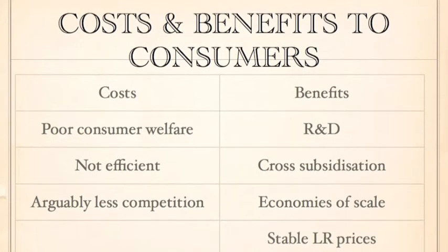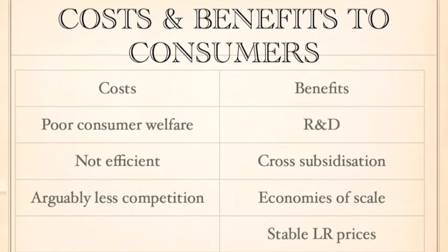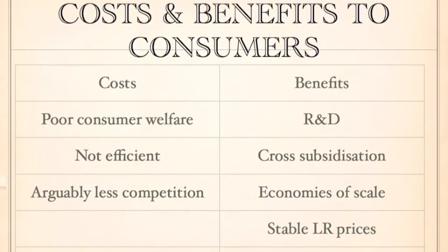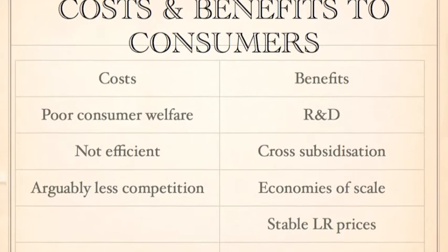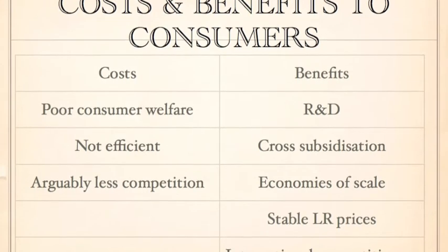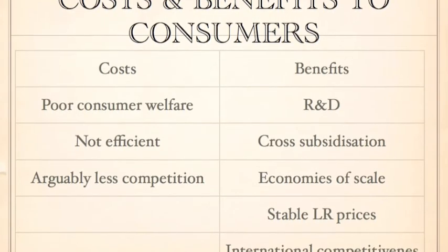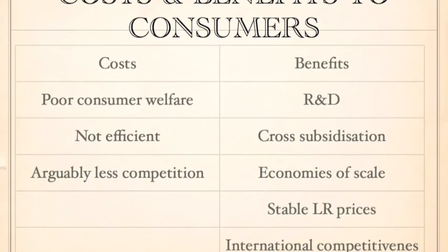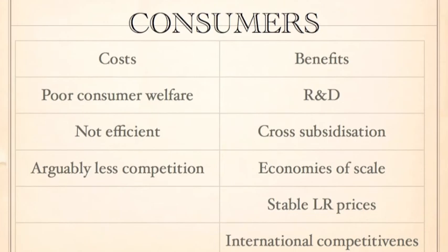Costs and benefits to consumers of a monopoly. One of the biggest costs is that there is poor consumer welfare — monopolies have a lower output and a higher price. They are not efficient, which has many implications, and because they reduce competition and there are hardly any firms in the market, this means that innovation and fresh ideas are lacking, which is important to ensure variety for consumers. However, there are benefits: firms make supernormal profits so they can invest in research and development, and if they make sky-high profits for one of their monopoly products then they can cross-subsidise other products and charge a lower price. They also benefit from economies of scale which they can pass on to the consumer at a lower price.